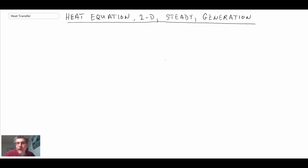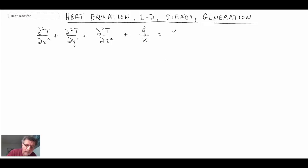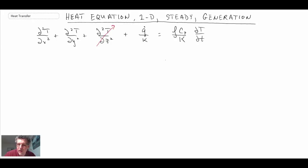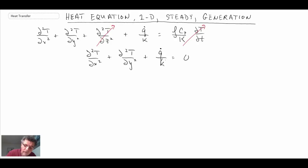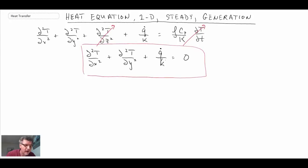Beginning, we'll write out the mathematical physics equation — in this case, the heat diffusion equation. We can then cancel out terms that are not appropriate. First, we're looking at 2D conduction, so the term with respect to z drops away. Since it's a steady state problem, the time derivative term also drops away. That gives us the equation we want to apply the finite difference technique to.